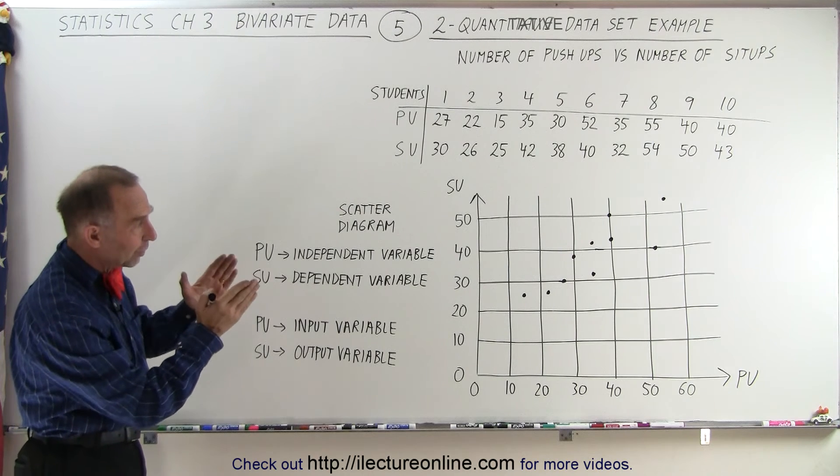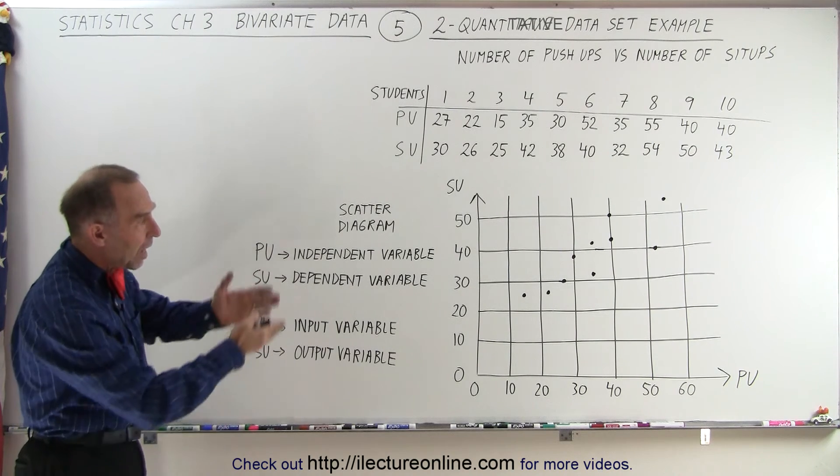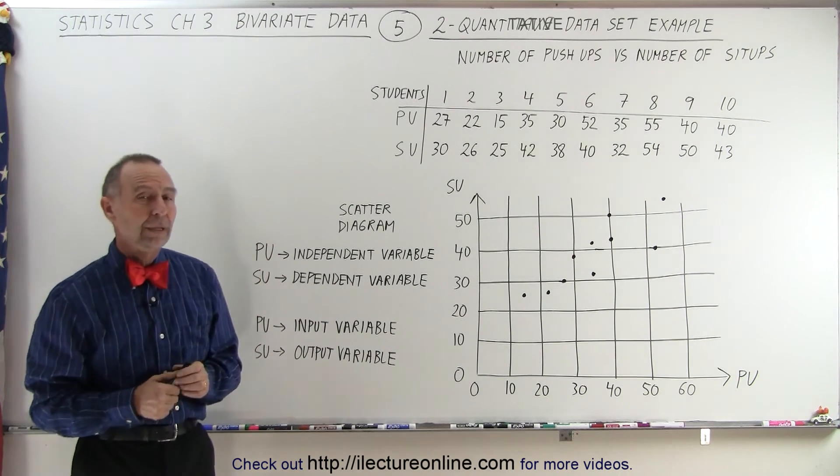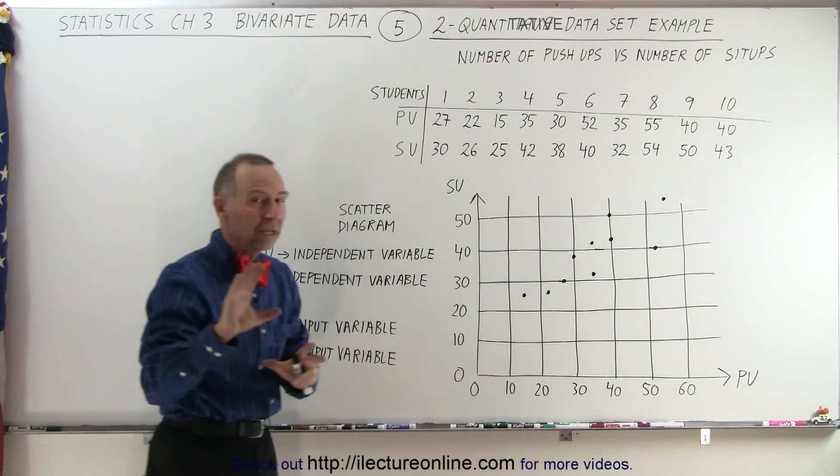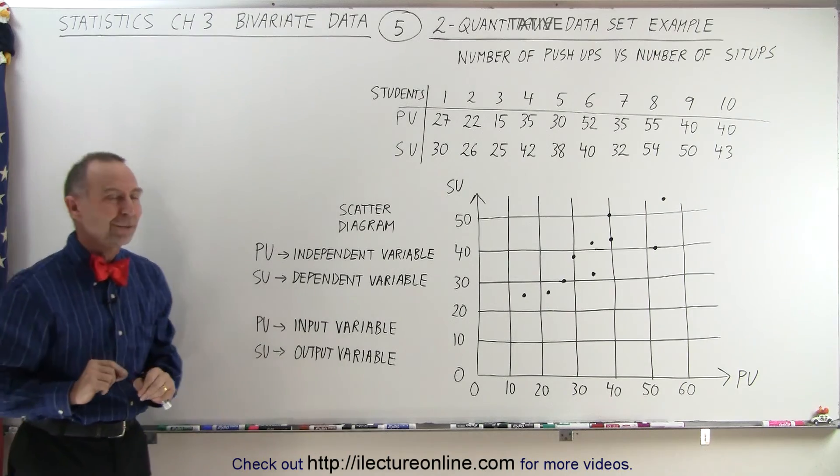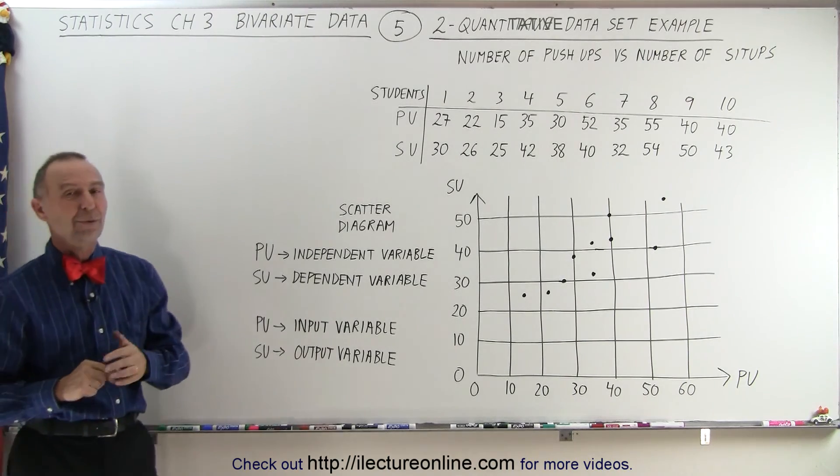But at least we can see visually by drawing a scatter diagram how they're related to one another. Of course, the closer they're lined up into a line, the better the correlation, but that is for later. And so that is how it's done.